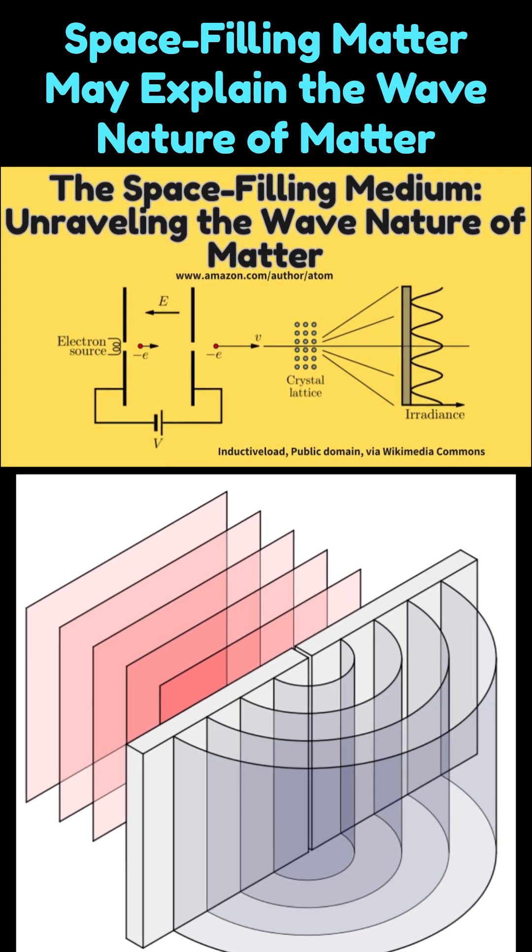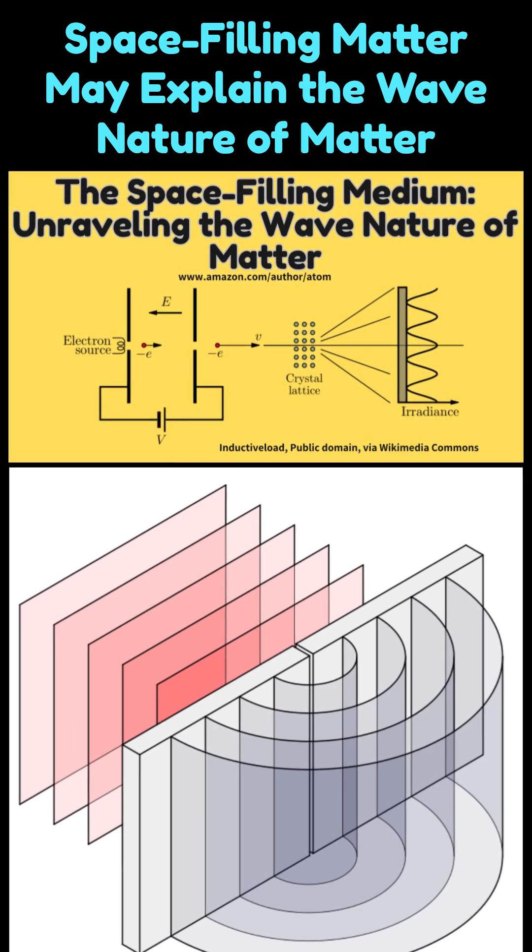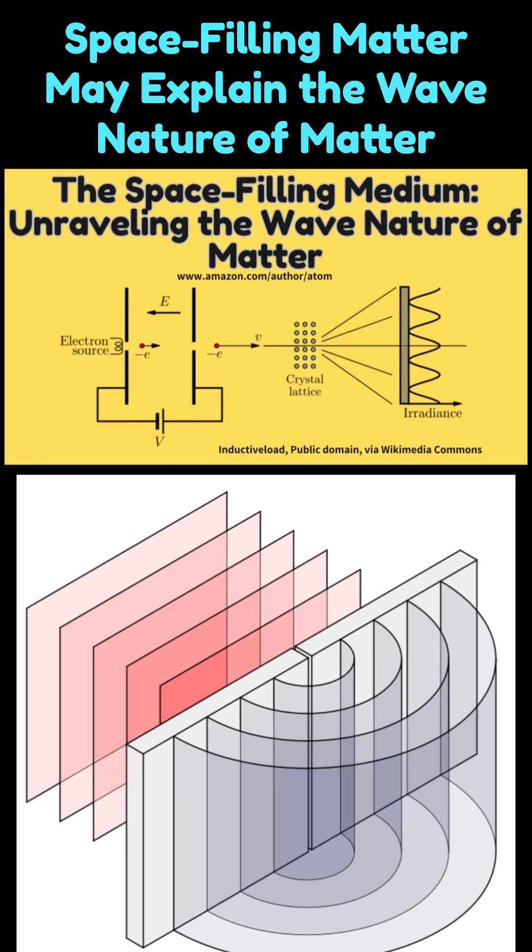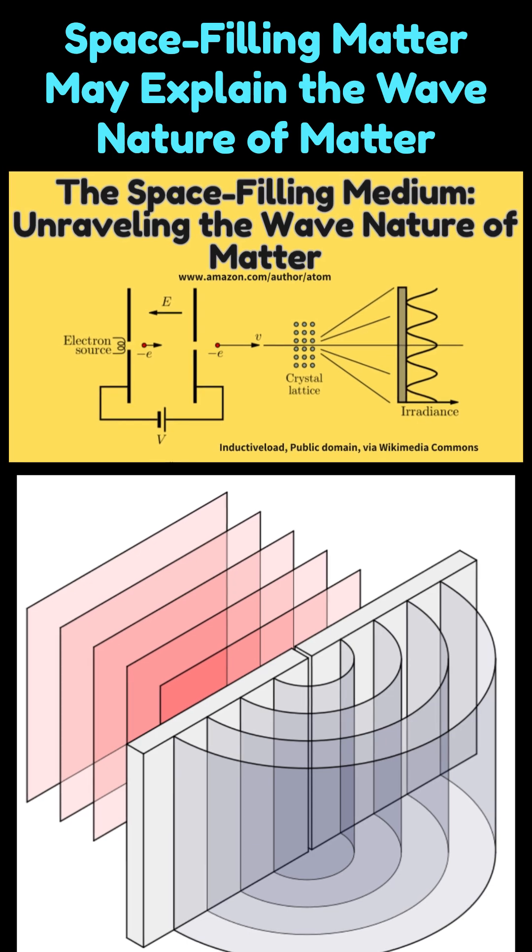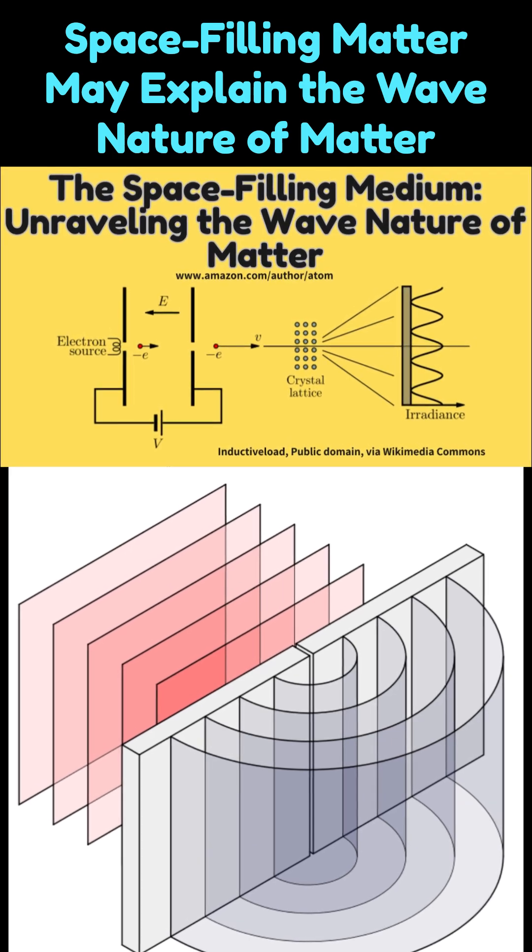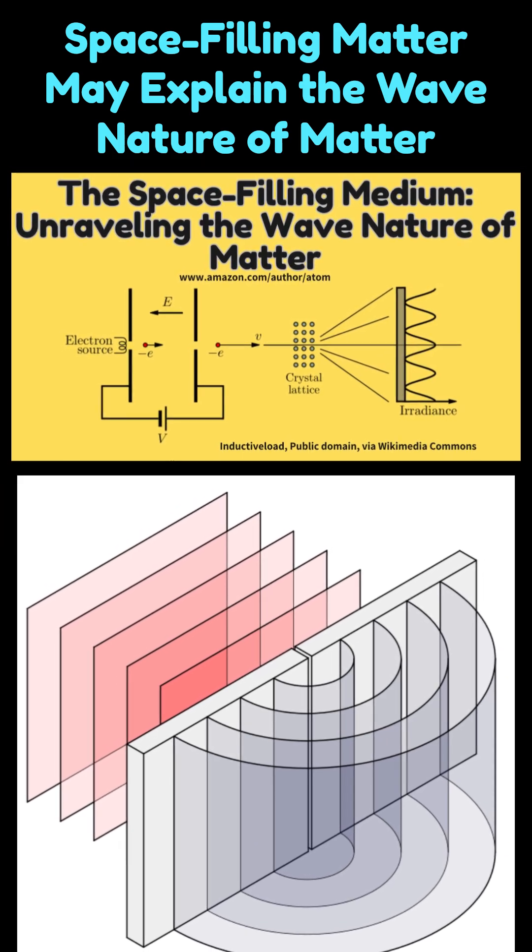This phenomenon may provide a physical explanation for the observed wave nature of moving electrons. Furthermore, even when electrons are sent through the slits individually, each electron follows a path similar to those of its predecessors due to the uniform influence